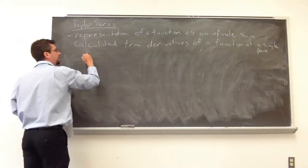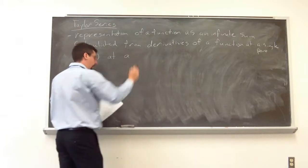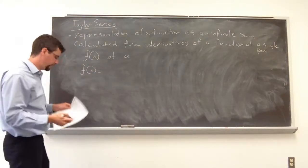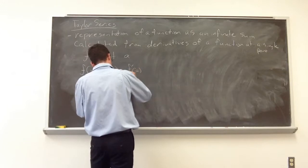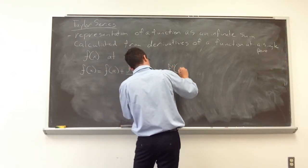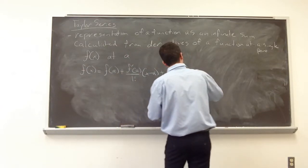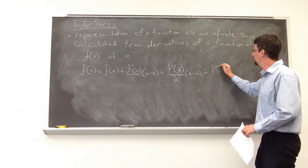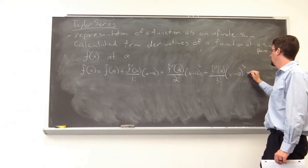For example, if we have a function f of x, we're going to calculate it at one individual point at point a. So if we have f of x calculated at about point a, we would first have the function at a plus the first derivative of a over 1 factorial times x minus a, plus the second derivative of that function at a over 2 factorial times x minus a squared plus f triple prime, or the third derivative at a over 3 factorial times x minus a cubed, and so on.